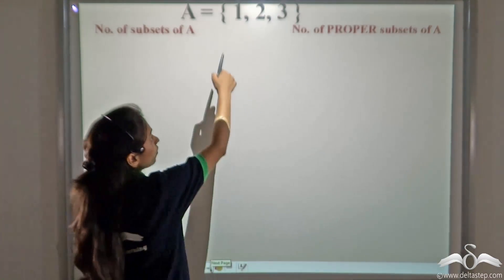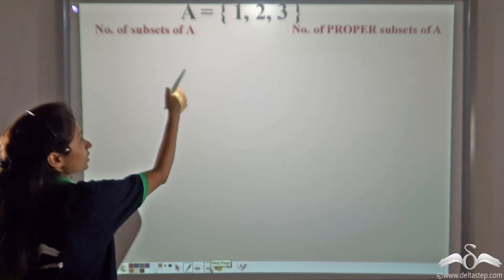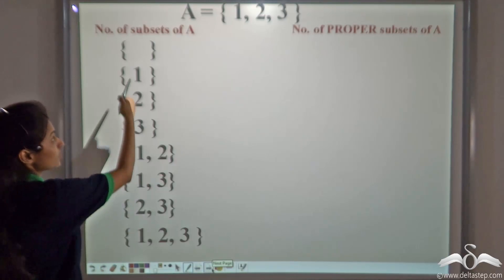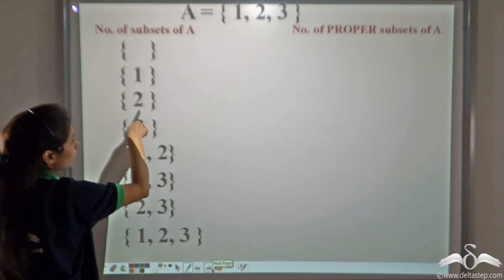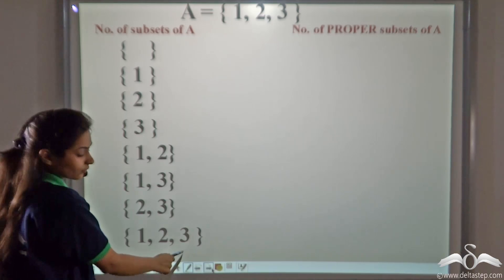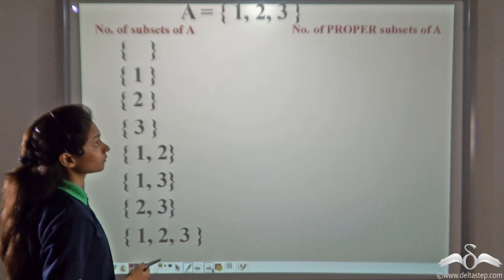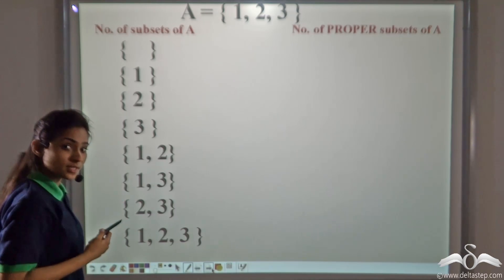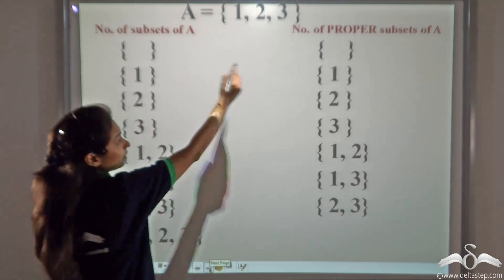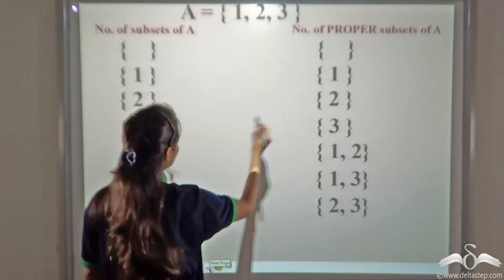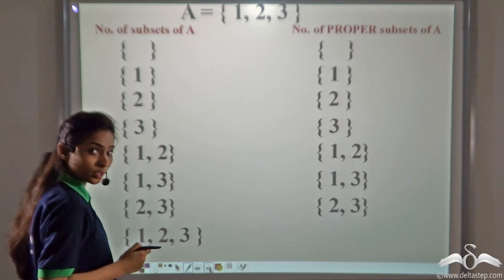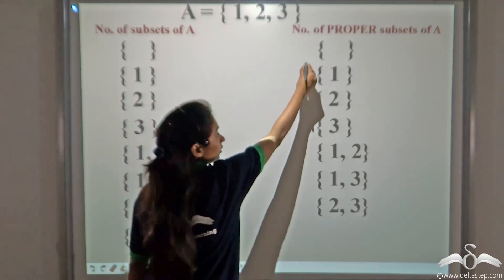A is the set {1, 2, 3}. Can you find the number of subsets and list them? The subsets of A are: the empty set, {1}, {2}, {3}, {1,2}, {1,3}, {2,3}, and the set itself {1,2,3} — giving 8 subsets. Now for proper subsets: they are also subsets of A but do not include the set itself. So the proper subsets are: the empty set, {1}, {2}, {3}, {1,2}, {1,3}, {2,3} — 7 proper subsets in total.